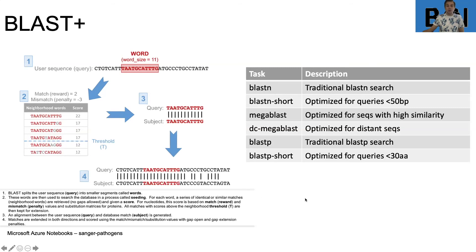There are also a number of default settings you can run within BLAST, including BLASTN short, which is optimized for short sequences; MEGABLAST, optimized for sequences with high similarity; DC MEGABLAST, optimized for the opposite; and equivalents in BLASTP protein space.